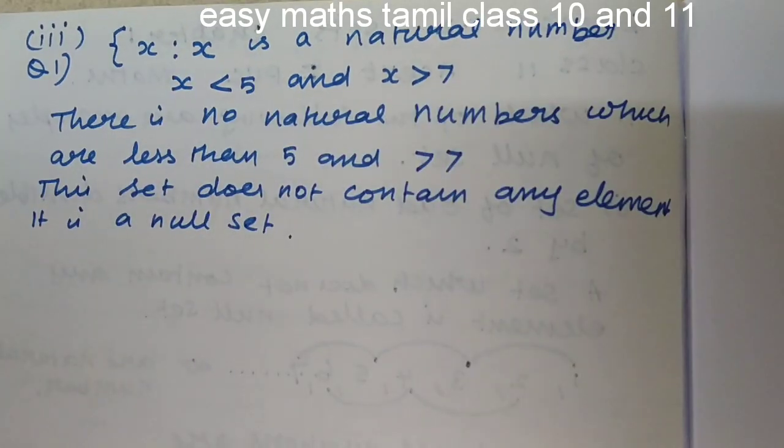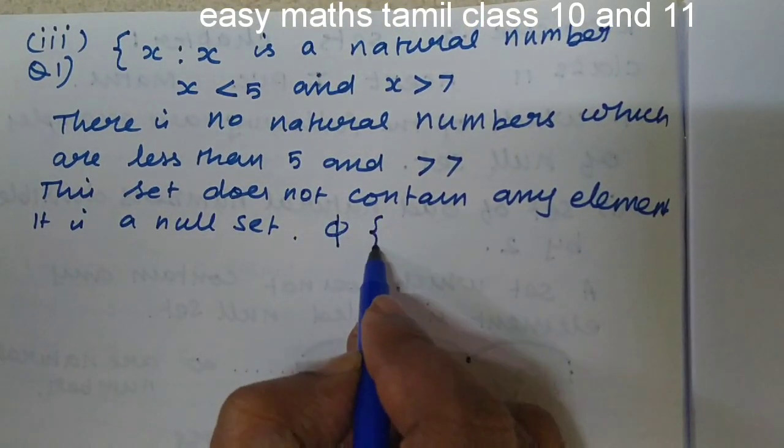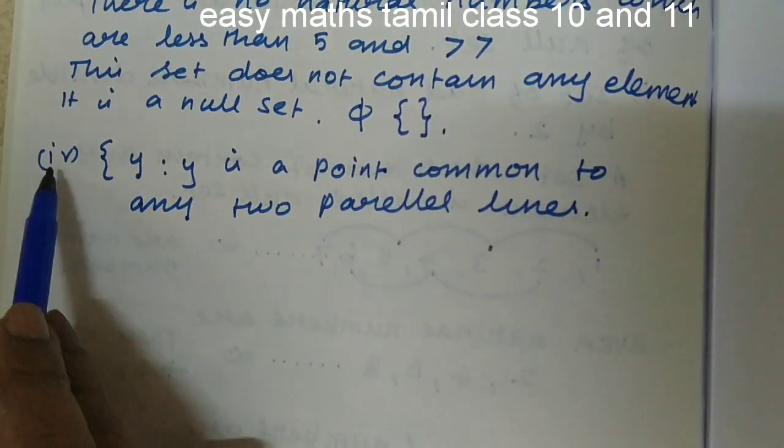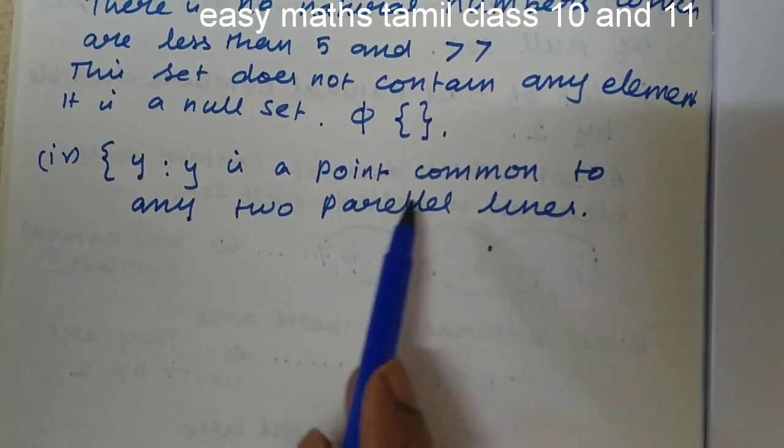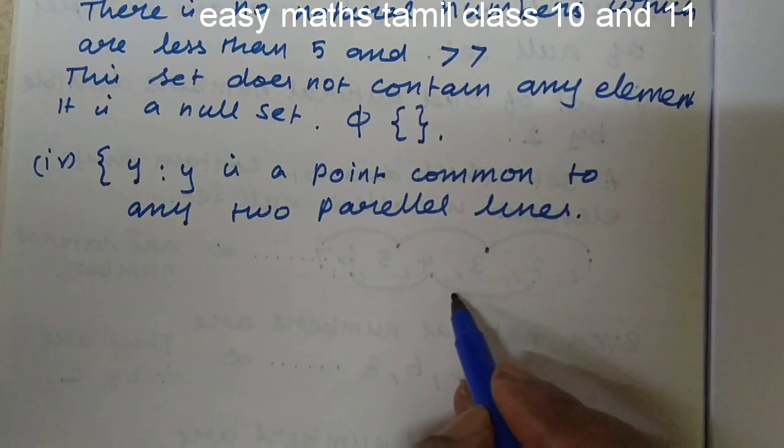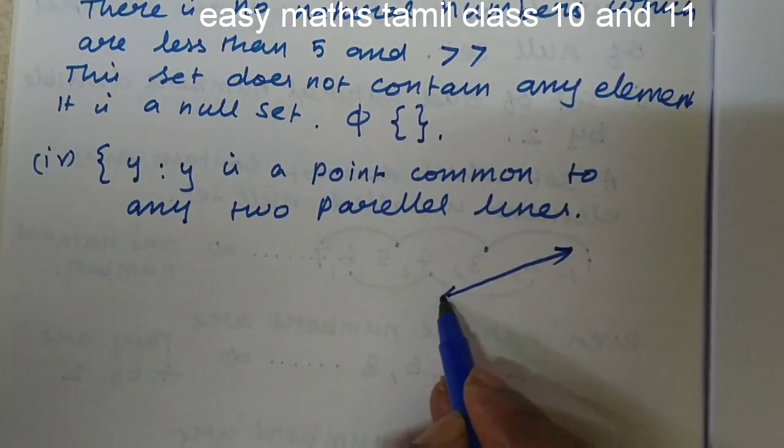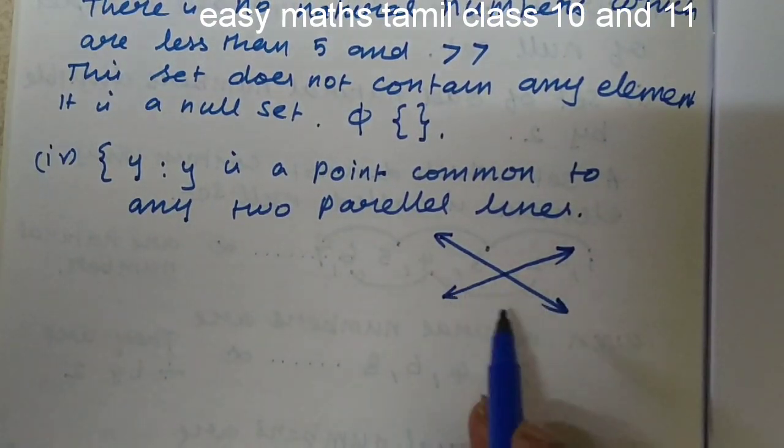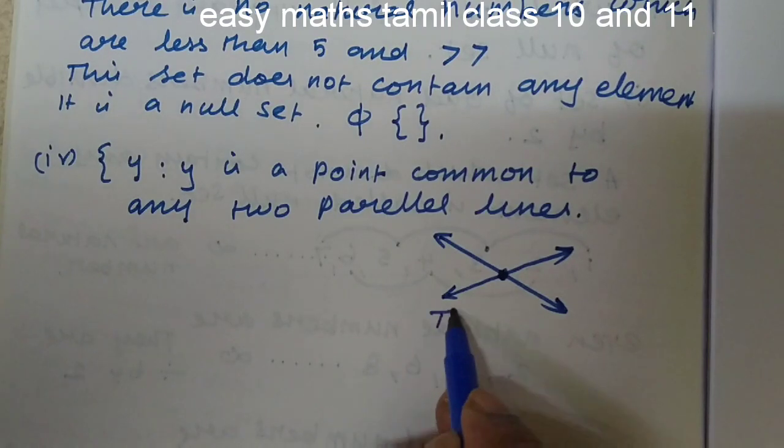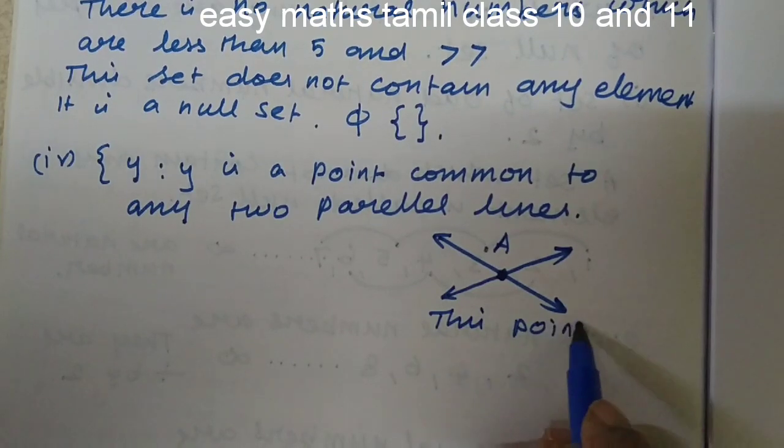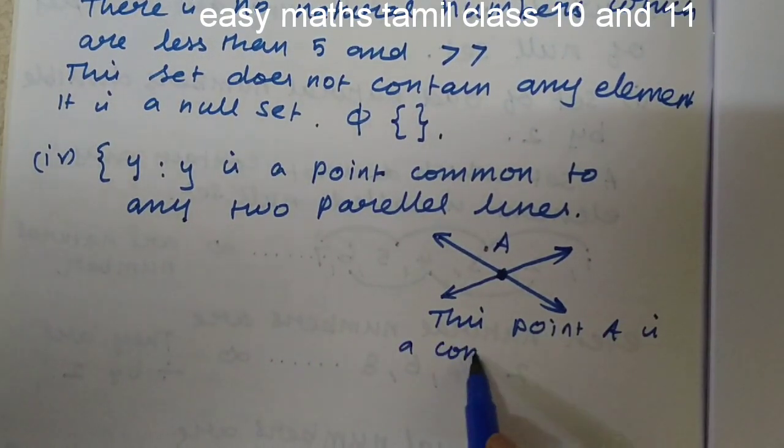Y is a null set where Y is a point common to any two parallel lines. If you draw two lines that intersect each other at any one point, this point A is a common point.